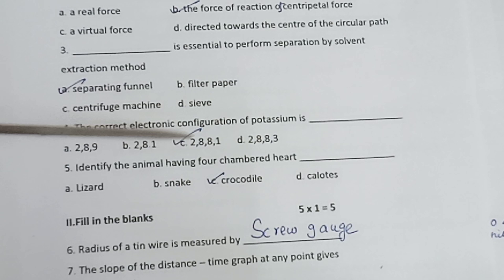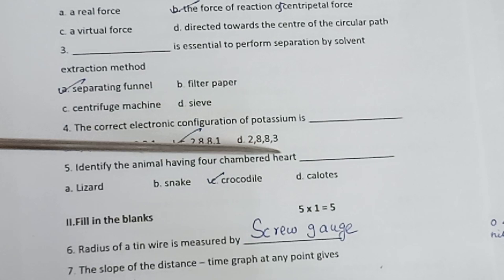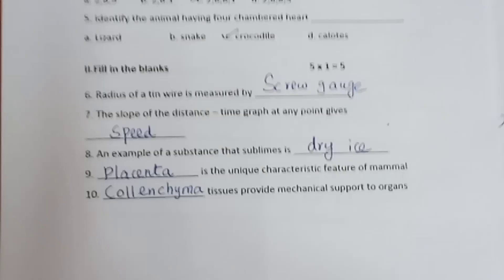Question 4: The correct electronic configuration of potassium is 2,8,8,1. Question 5: Identify the animal having 4 chambered heart - Crocodile.